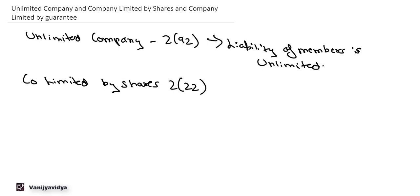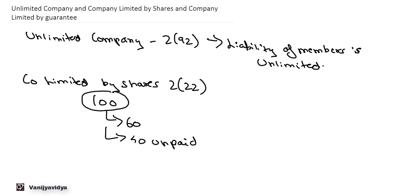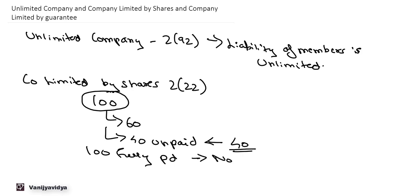For example, if a share is of ₹100 and out of this ₹60 is paid and ₹40 is unpaid, then the total liability of the member is ₹100. Since ₹60 is already paid, the pending liability is ₹40 per share. If the ₹100 is fully paid, then there is no further liability on the members. So in a company limited by shares, the liability of the members is limited to the share value.